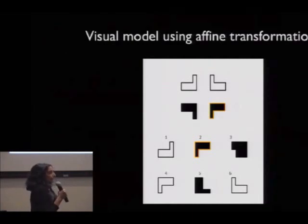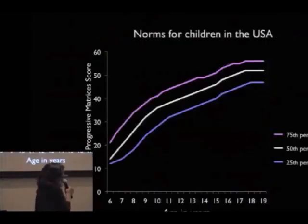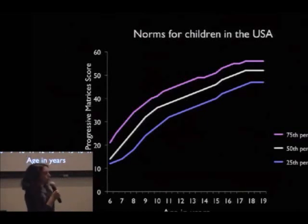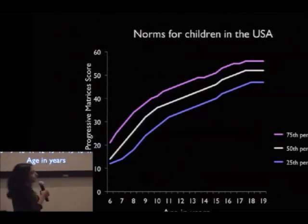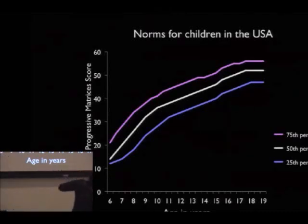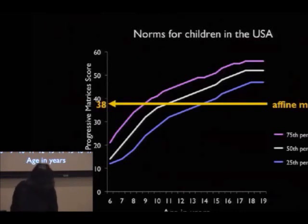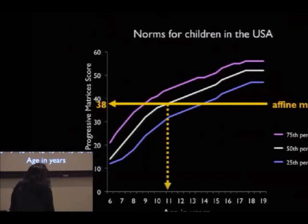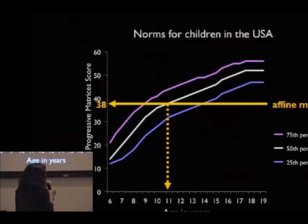We've tested this model against the entirety of the Standard Progressive Matrices, the most widely used Raven's test. This graph shows the norms for human children in the US. The x-axis shows the age of kids in years, the y-axis shows their score out of 60 problems, and the white line in the middle is the 50th percentile. An average six-year-old gets about 14 problems correct; an average 18-year-old gets closer to 52. Our model, using purely visual operations on the test inputs, gets 38 correct out of 60, corresponding to an average 10 or 11-year-old.